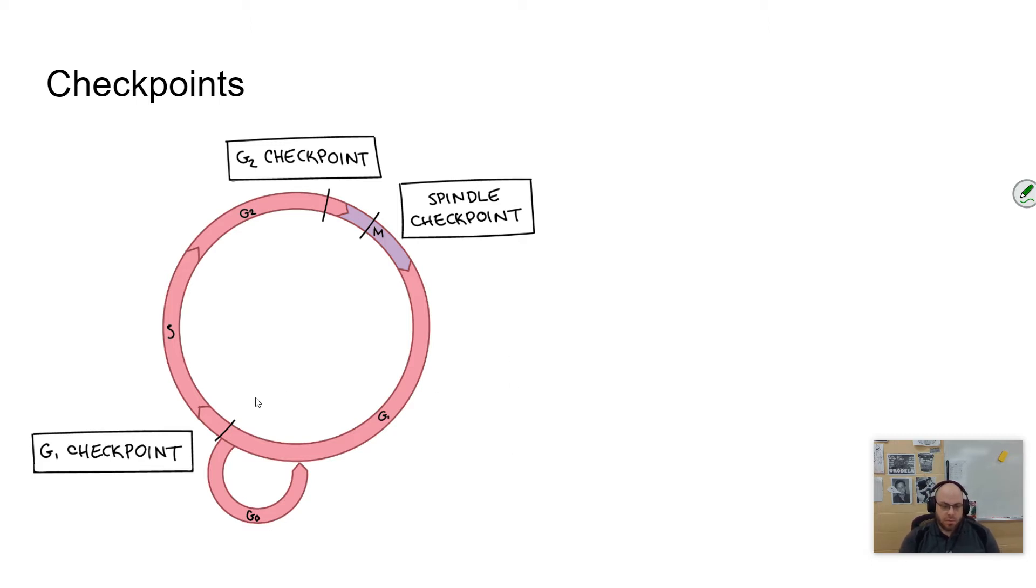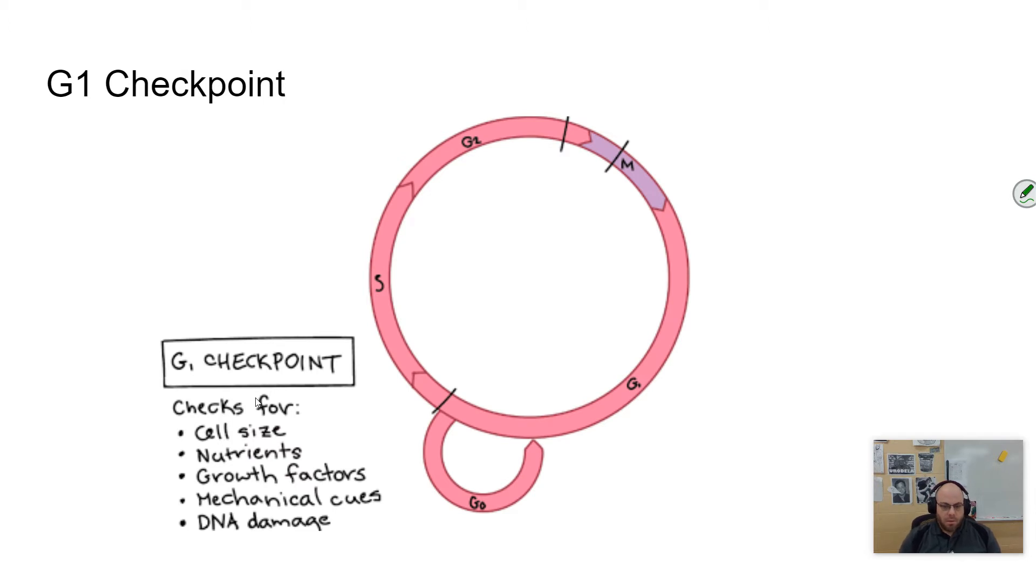We'll start with the G1 checkpoint, which happens at the end of the G1 phase. It checks for cell size: Is the cell big enough to divide? Does the cell have enough nutrients? Division is a very energy-intensive process. Are there appropriate growth factors? Is the DNA intact? Sometimes this checkpoint is called the point of no return because after this checkpoint, DNA will be replicated, and there's no need to replicate DNA unless the cell is going to divide. Typically after this checkpoint, cell division will follow through. Some cells never get past this checkpoint because they don't divide.